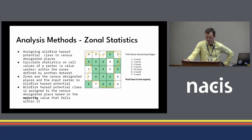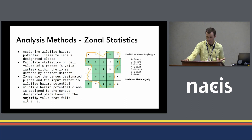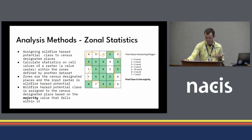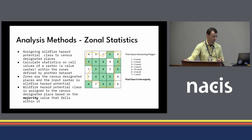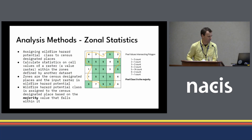Zonal statistics were used to basically assign a wildfire hazard potential class to the census-designated places. This method calculates a defined statistic on cell values within an area or zone of another data set. The zones are the census-designated places and the raster is the wildfire hazard potential pixel value. The statistic I calculated was the majority — the most common single pixel value within a zone. So if pixel value 5 is most common, with 14 pixels inside a zone, it would be assigned a majority of 5, or very high wildfire hazard potential.